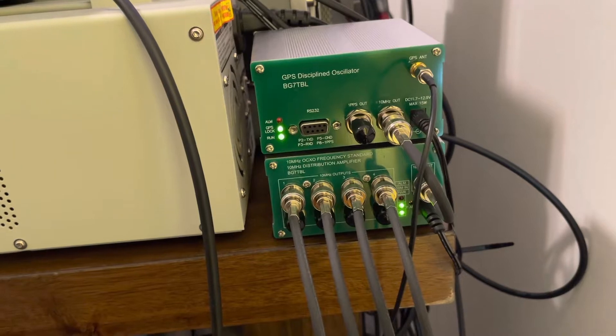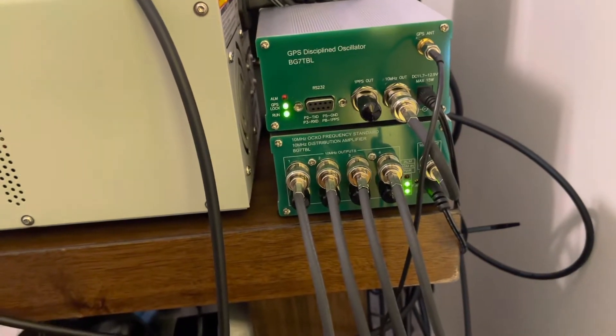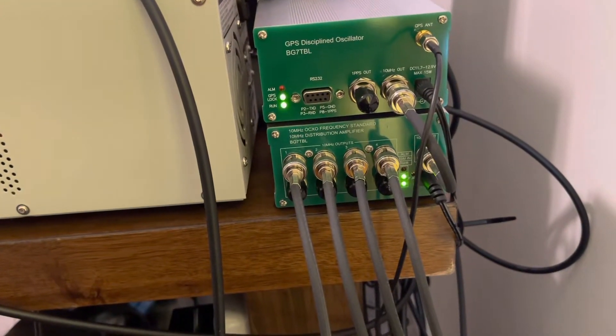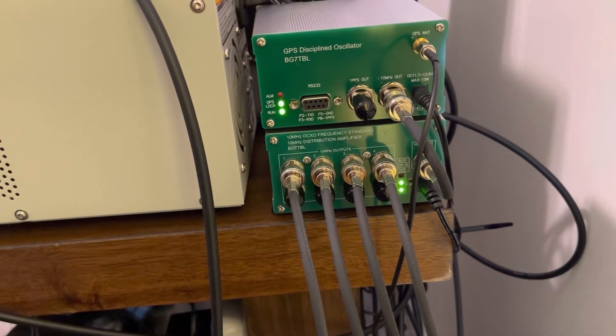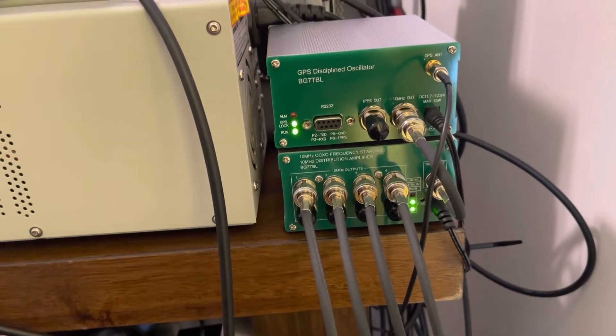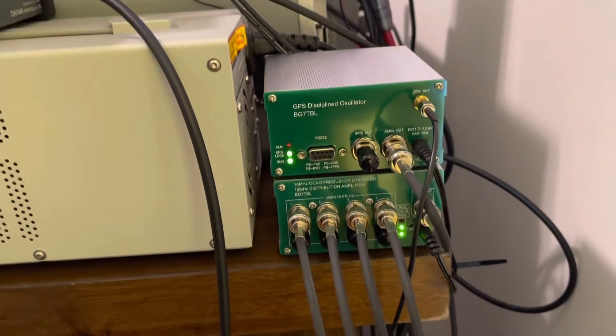The disciplined oscillator feeds this distribution amplifier right below it, and from there I have four outputs going to the equipment I just mentioned. It keeps everything on frequency.